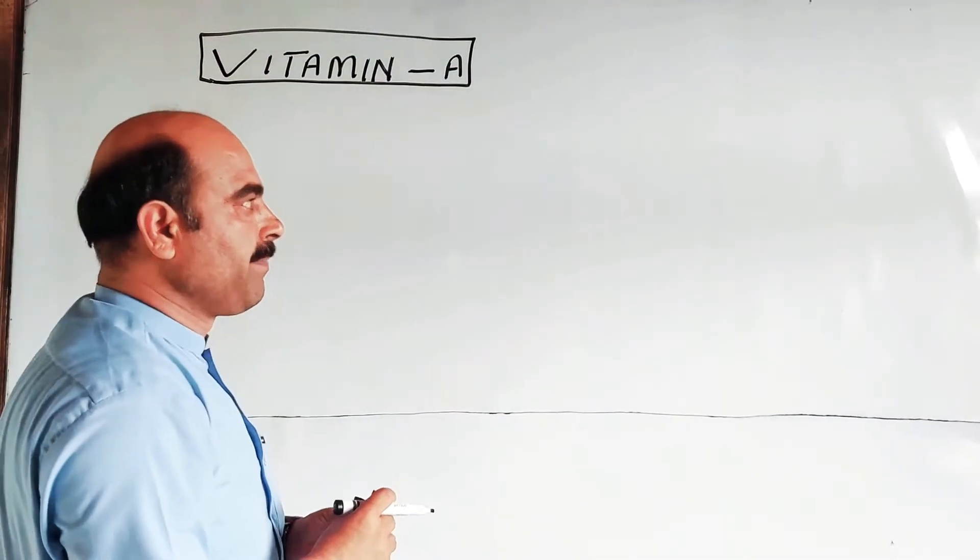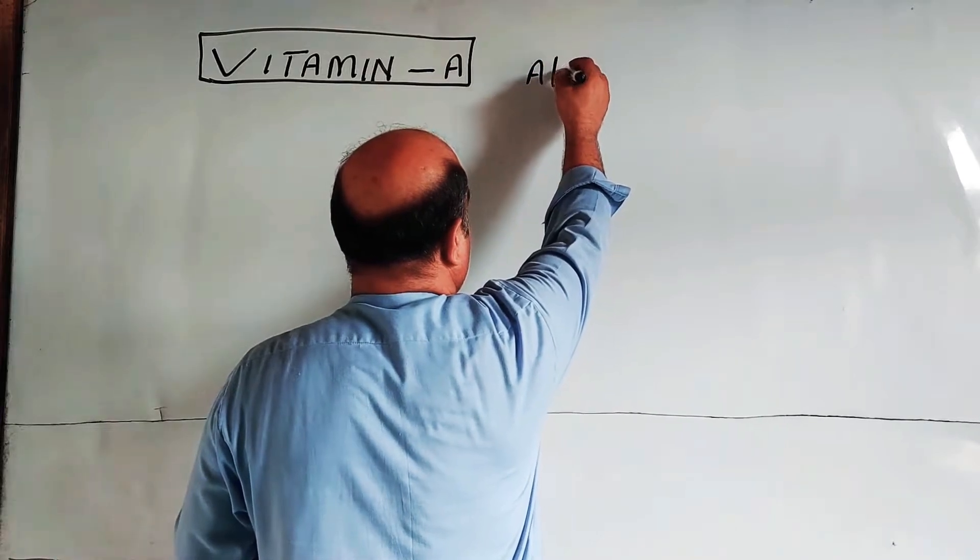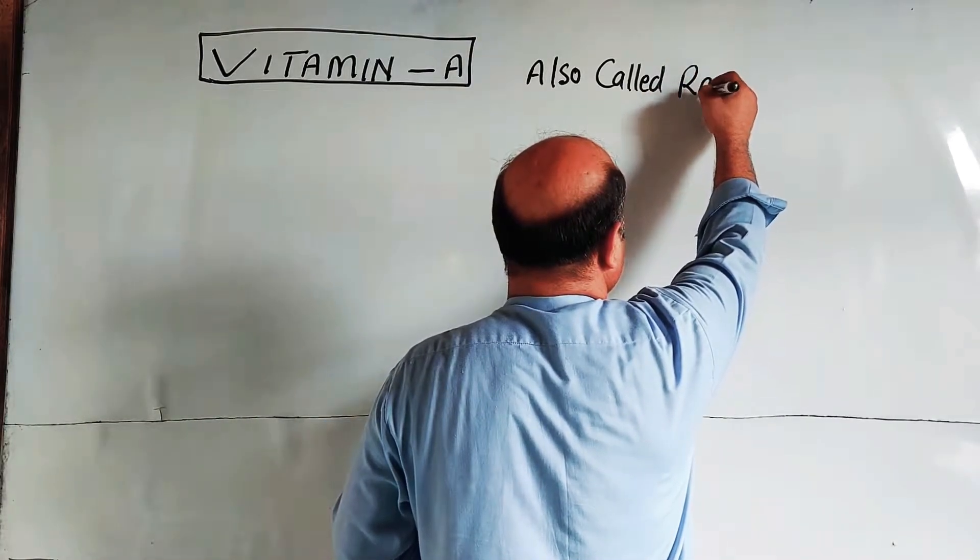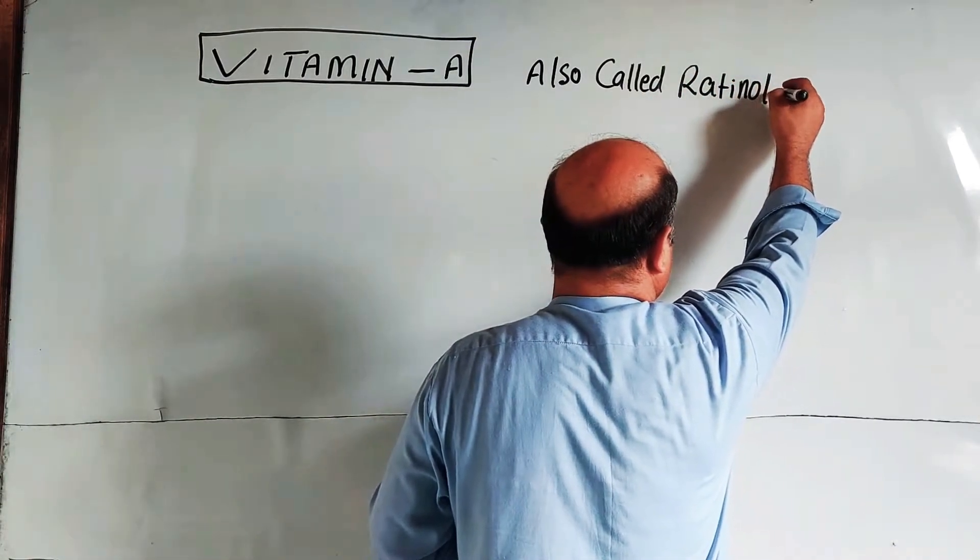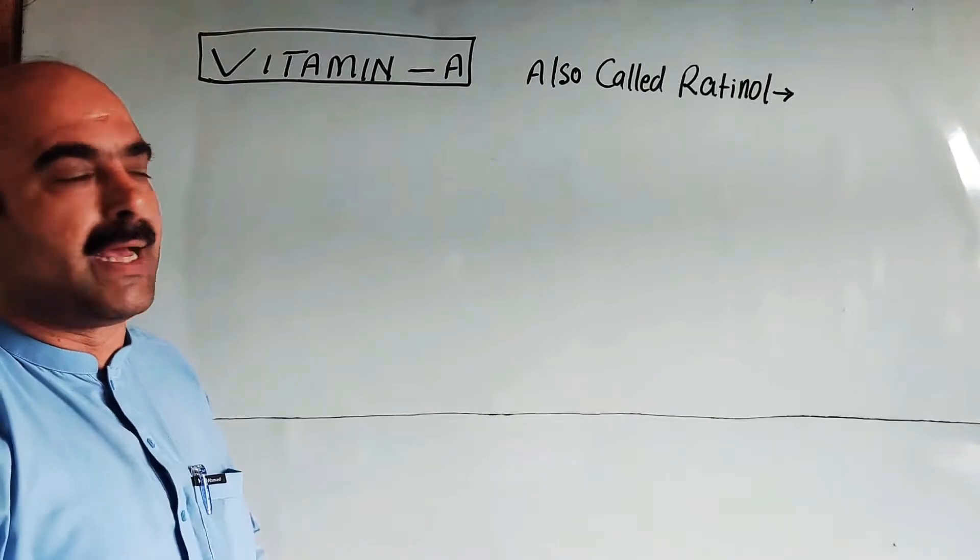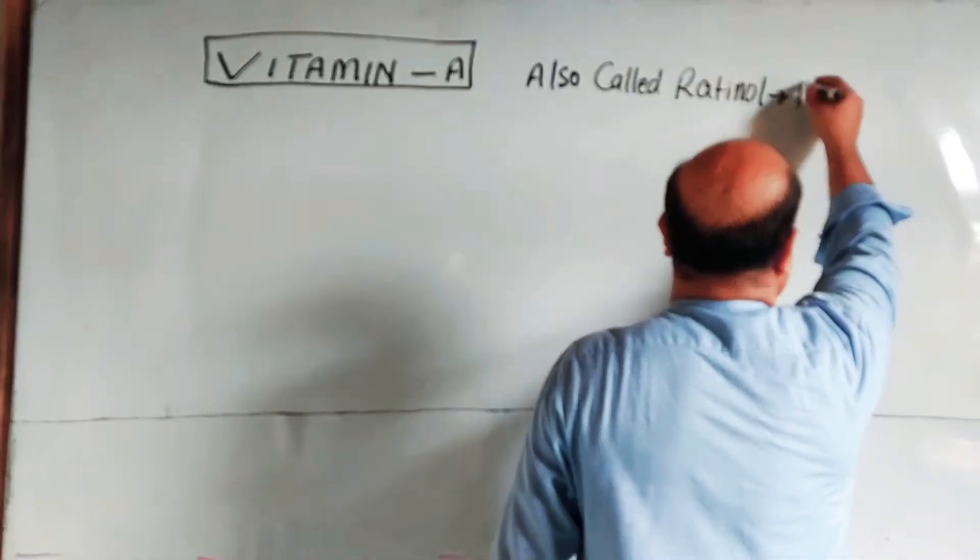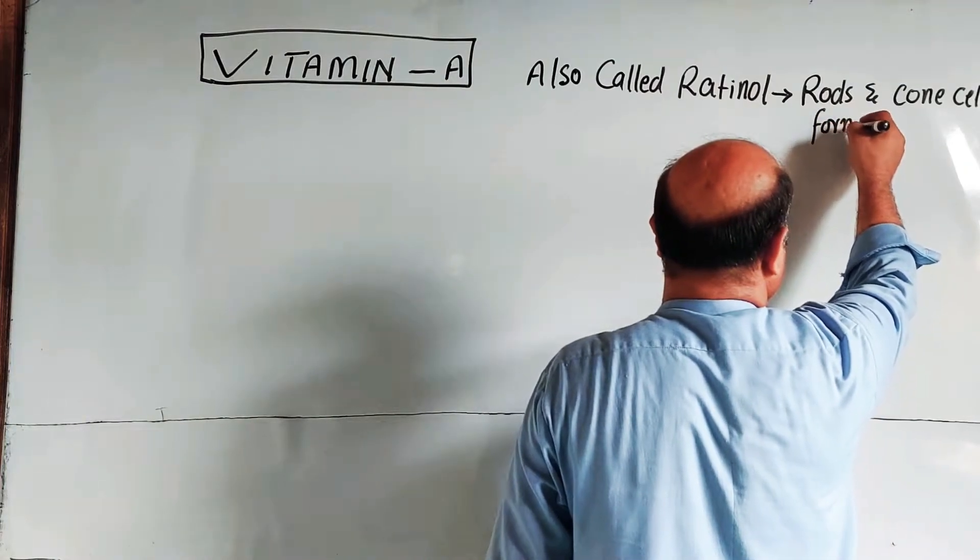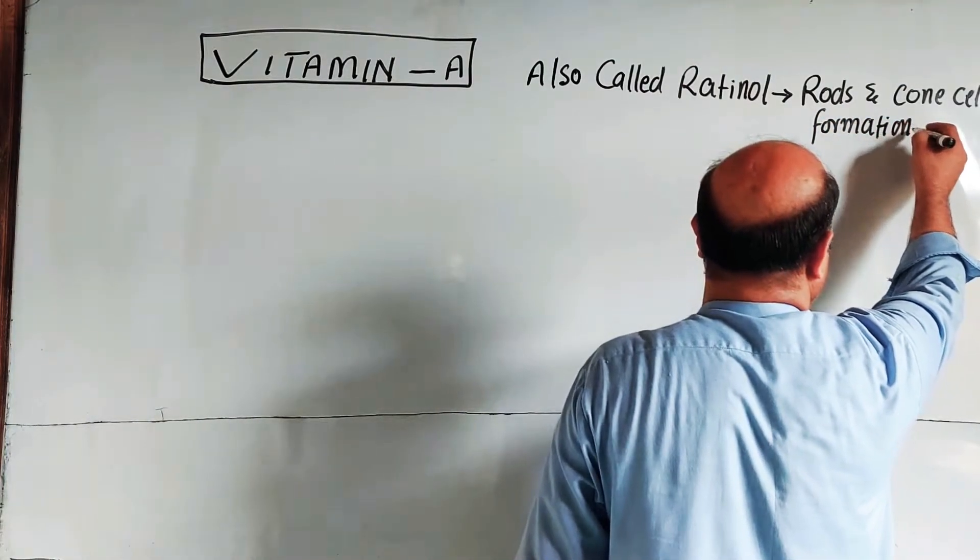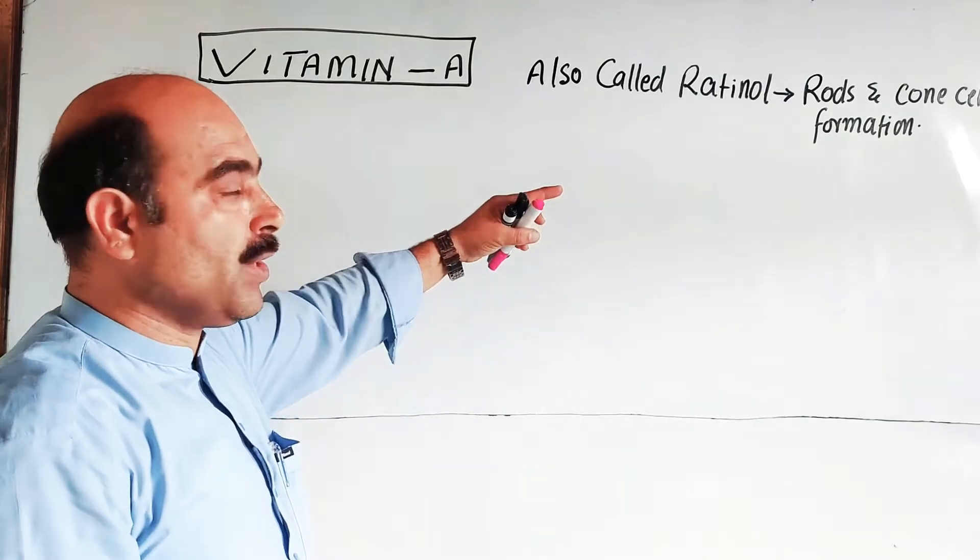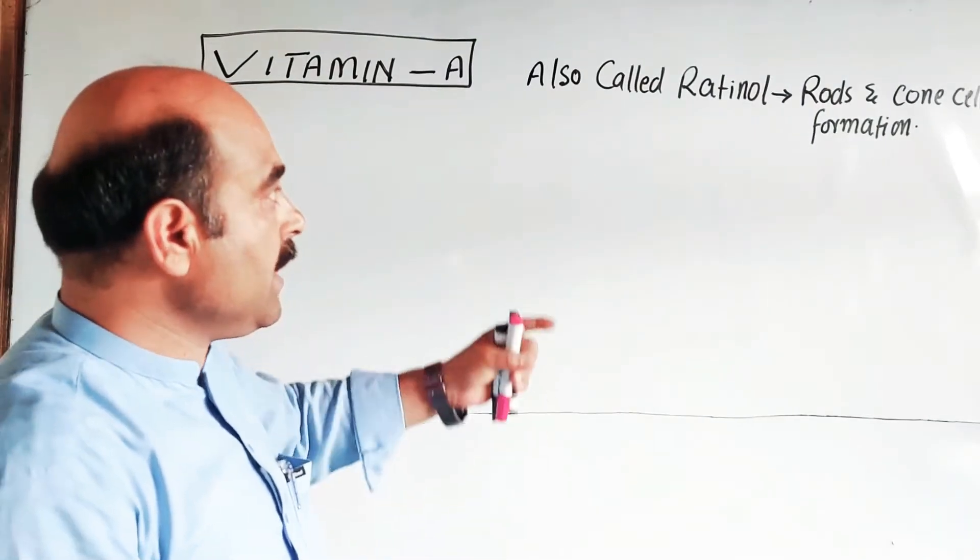First, what is Vitamin A? It is also called retinol. It is called retinol because it helps in the formation of cells like rods and cones. The rods and cones cell formation - these vision cells - that's why it helps.